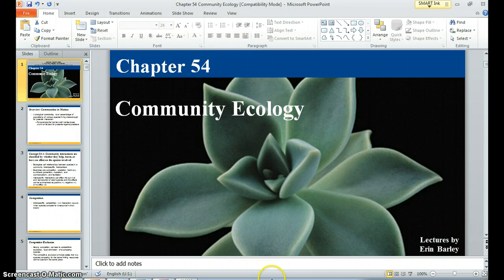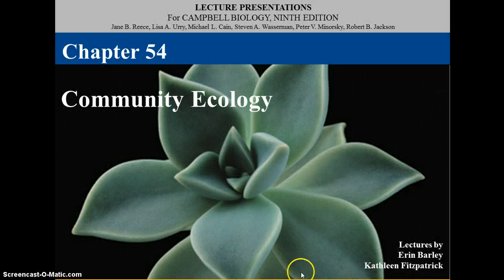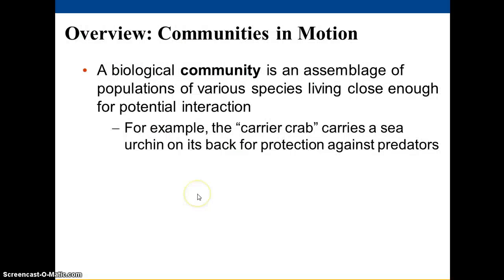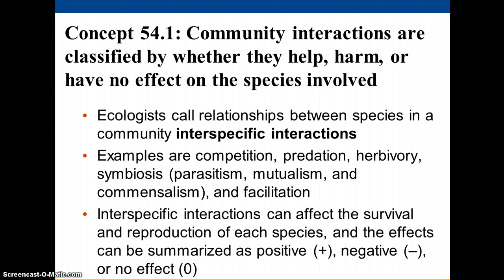Let's talk about Community Ecology, Chapter 54. Here we're talking about the assemblage — the mixture of various populations of different species living together in a particular area and interacting with each other. These kinds of interactions we would describe as interspecific, between-species interactions, and they come in various forms.